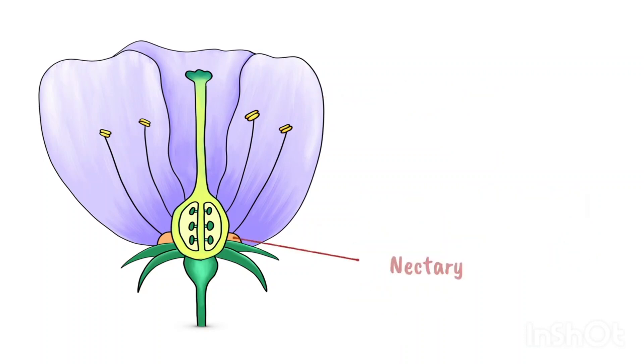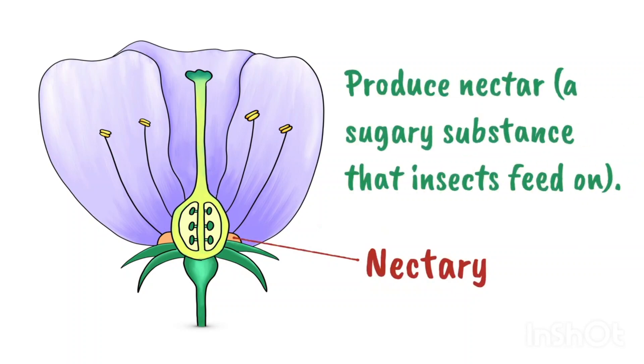Flowers often have nectaries in them. As the name suggests, these produce nectar, a sugary substance that insects feed on. This provides a good incentive for insects to visit the flower.